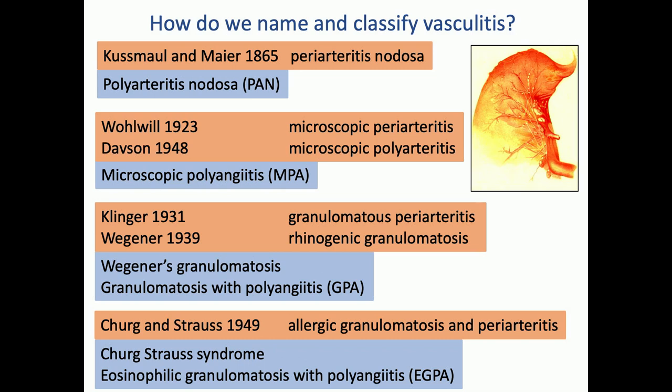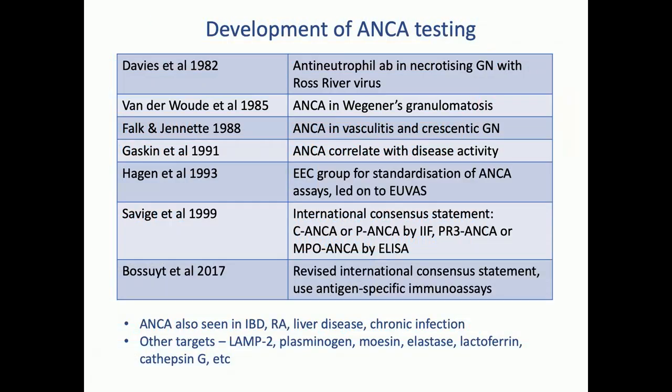ANCA hadn't been heard of during all this time — ANCA is a very recent thing through which many of us have lived. ANCA was probably first described in the early 1980s by Davies in a series of patients in Australia with crescentic GN and Ross River virus infection. The classical description was in 1985 by Foucault van der Vaude, who described cytoplasmic or C-ANCA in Wegener's granulomatosis. This was followed fairly shortly by Falk and Jeanette at Chapel Hill, who described perinuclear or P-ANCA in other forms of vasculitis and crescentic GN. We started doing ANCA testing in our laboratory and set up a diagnostic test in the late 1980s.